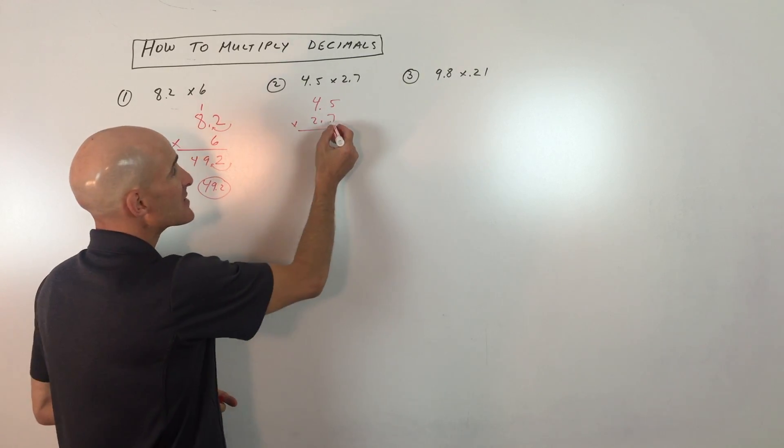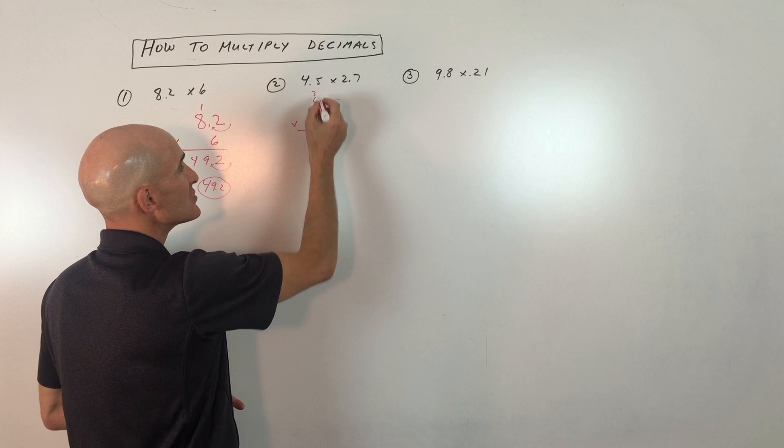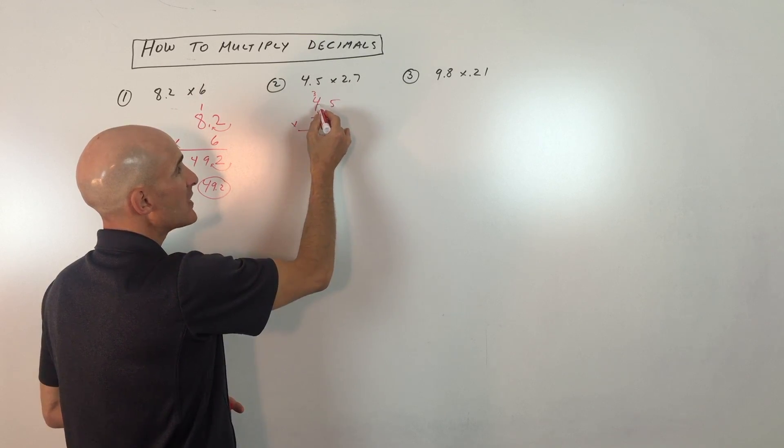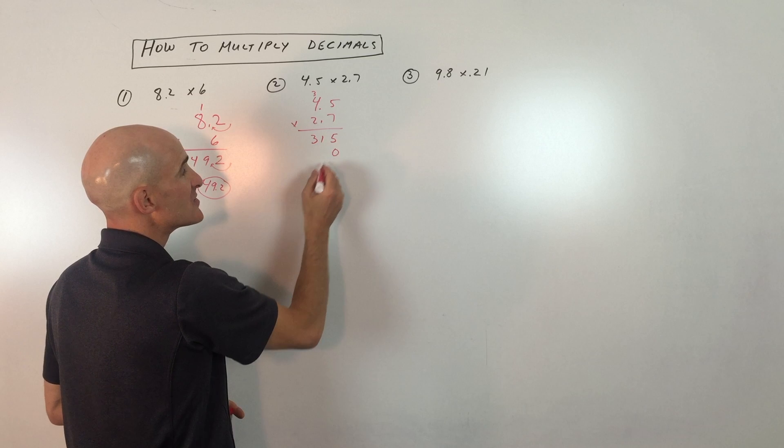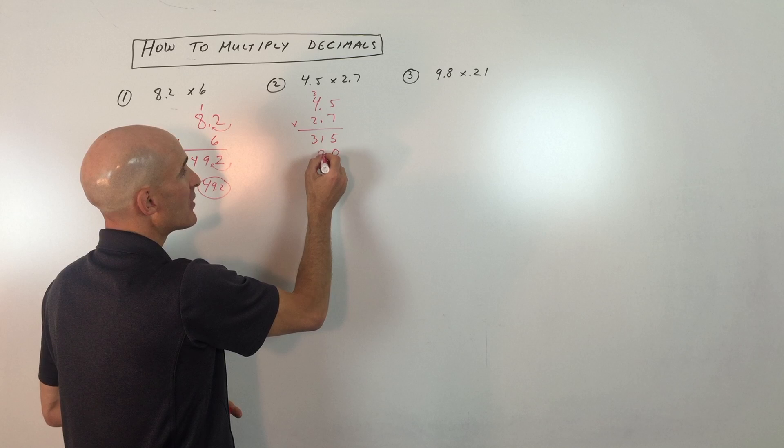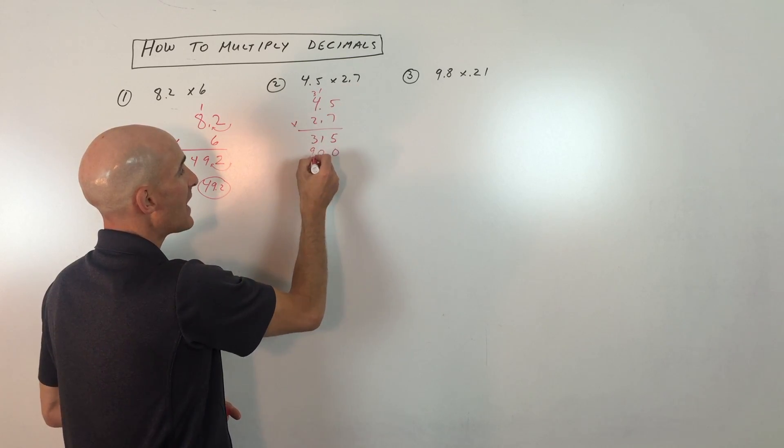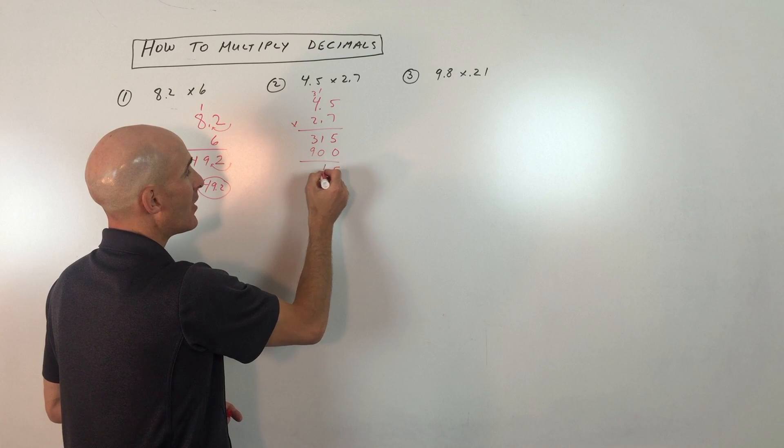So we've got 7 times 5, which is 35. I put down the ones unit and I carry the tens unit. 7 times 4 is 28 plus 3 is 31. I put 0 for a placeholder there. 2 times 5 is 10. I put down the ones unit and carry the tens unit. 2 times 4 is 8 plus the 1 is 9. Then I just add straight down.